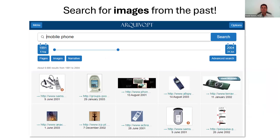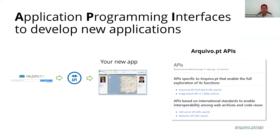Users can also search for images archived from the web in the past. The Search and Access tools can be automatically accessed through the Archive.pt APIs to develop new services.